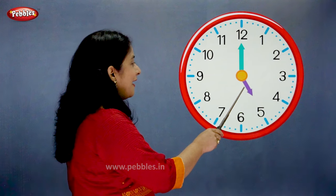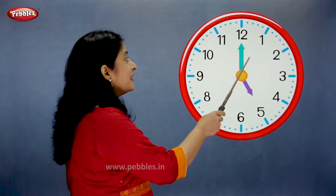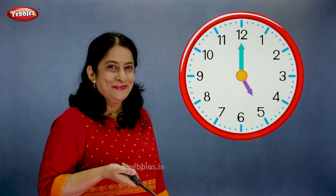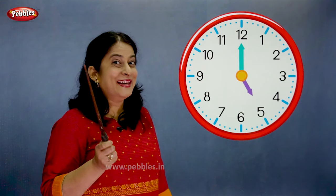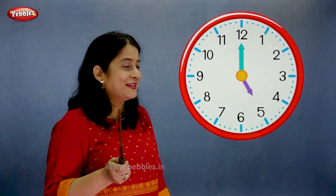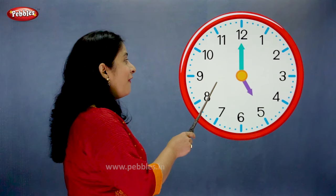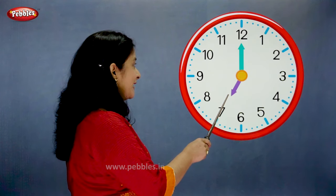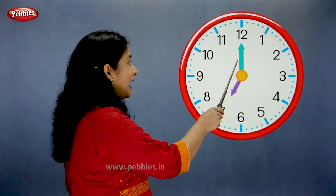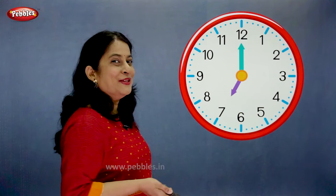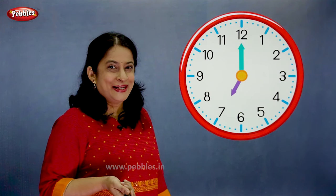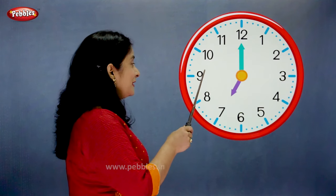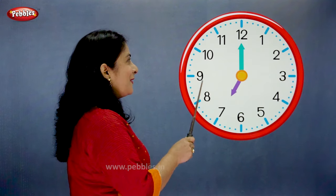The hour hand is on 5. The minute hand is on 12. So what is the time? Come on, tell me. Right — the time is 5 o'clock. The hour hand is on 7. The minute hand is on 12. So what is the time? Come on, tell me fast. Correct — the time is 7 o'clock.